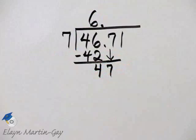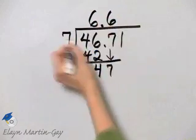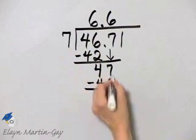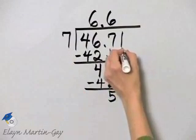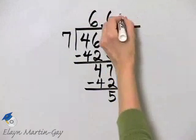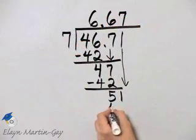How many times does 7 divide into 47? Well, again, 6 times. 6 times 7 is 42, remainder of 5, which is less than 7, so I'm okay. Bring down the next digit, which is a 1. Now, how many times does 7 divide into 51? That will be 7 times, because 7 times 7 is 49.